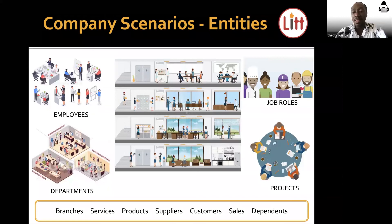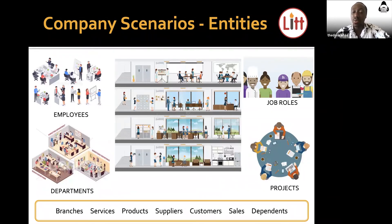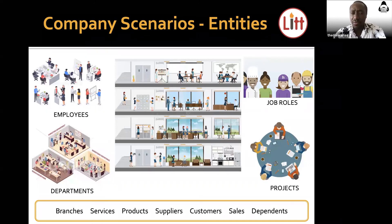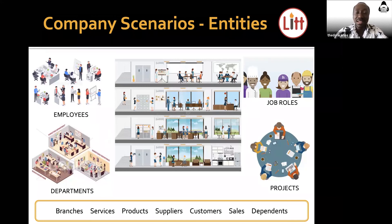As part of the company scenario, some companies have branches. Some could be offering services or selling products, so there could be suppliers providing products and customers engaging in sales. Some employees could have dependents that HR might want to track. All of these could be entities, but it depends on the company and the scope of the data you are modeling. We'll limit our sessions to only four entities: employees, departments, job roles, and projects.